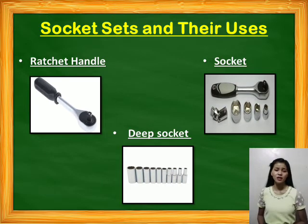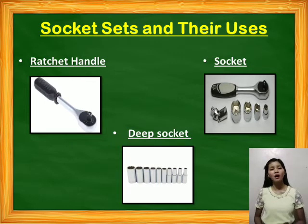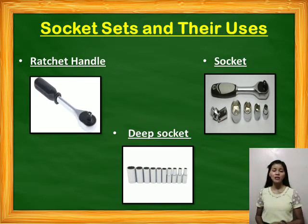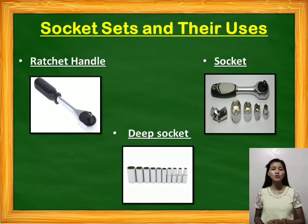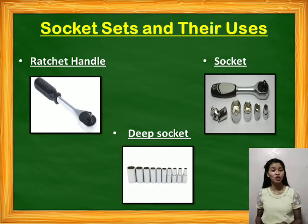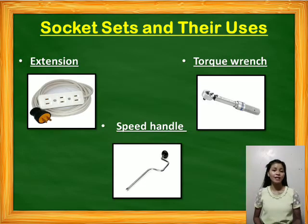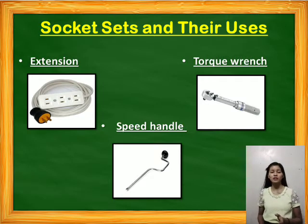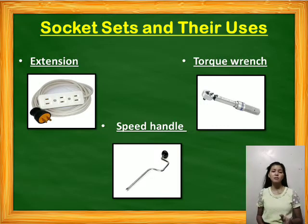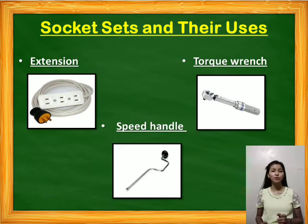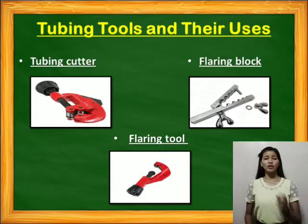Socket sets and their uses: ratchet handle is used to drive sockets so that it will tighten or loosen with a ratcheting motion. Socket is used for working with head bolts or nuts. The deep socket is used for working with nuts or bolts in recessed places that a regular socket cannot reach. Extension is used to extend the socket into hard-to-reach places. Torque wrench is a tool used for tightening head bolts and nuts to specified torque limits. Speed handle is a tool driven by operating with both hands so that an operator can loosen or tighten nuts and bolts quickly.